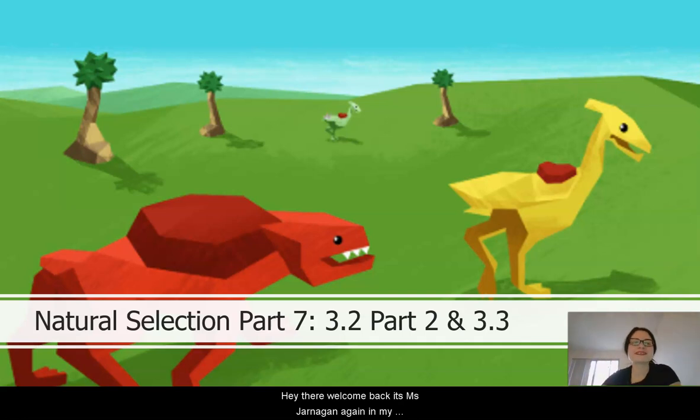Hey there, welcome back. It's Ms. Jarnigan again from my Fortress of Science here in Seattle, Washington. And we're going to be finishing out Natural Selection Part 8, which is going to be Lessons 3.2 and 3.3.